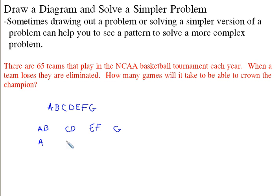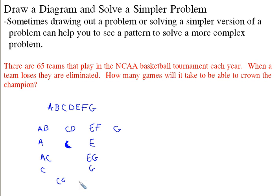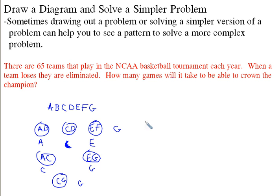Let's say A wins, C wins, and E wins. G didn't play, so now A plays C and E plays G. Let's say C wins and G wins, so now C and G play, and G wins. Counting the games: one, two, three in the first round, then four, five, then six games total.